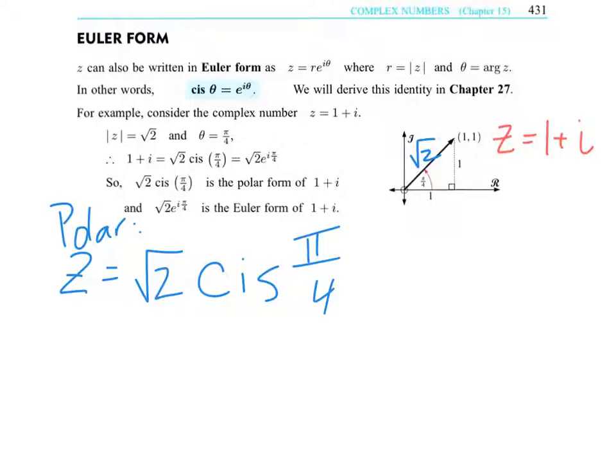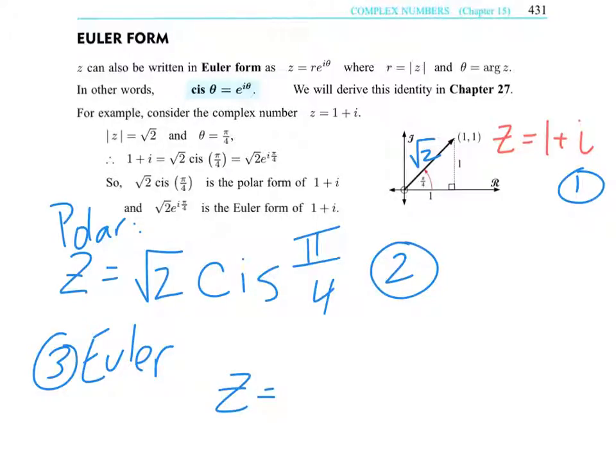So we have form number 1, Cartesian form, a plus bi form, and then polar form would be our option 2. And then Euler's form is option 3. And that becomes, we would say z is equal to the modulus times e to the i theta, which was pi over 4. That's the exponent up there.